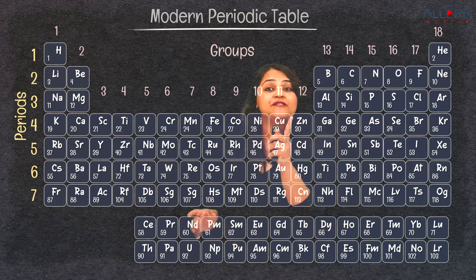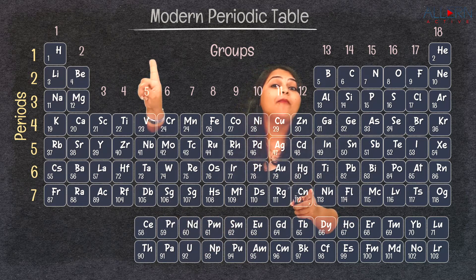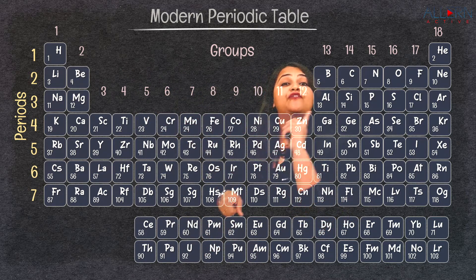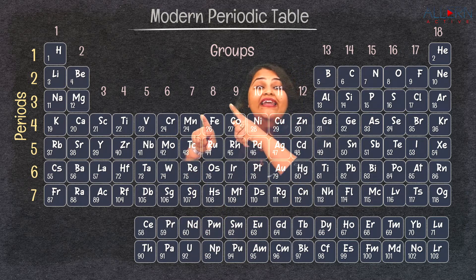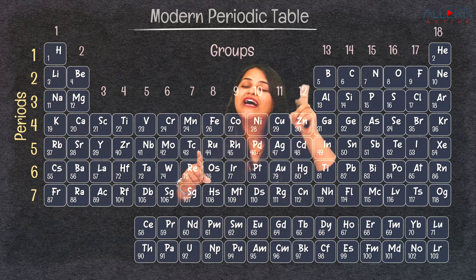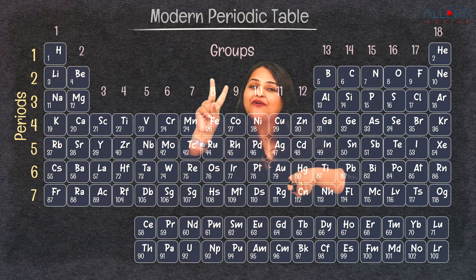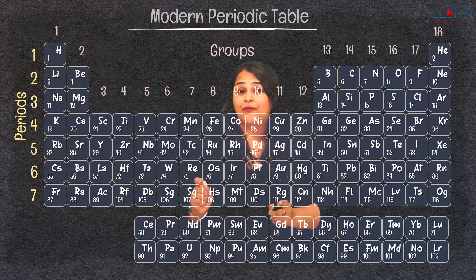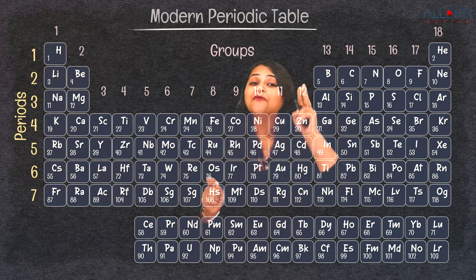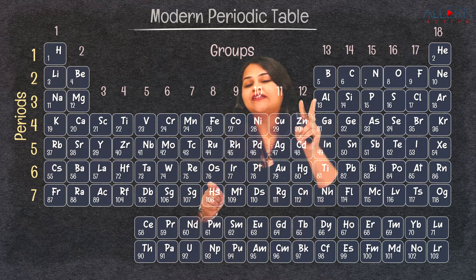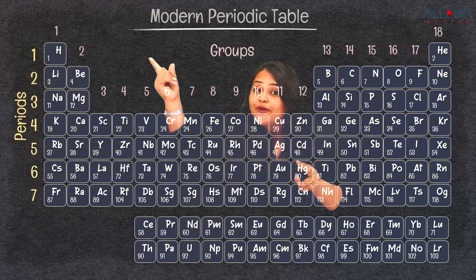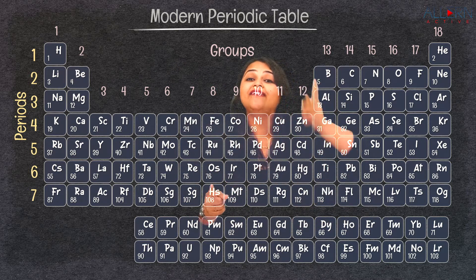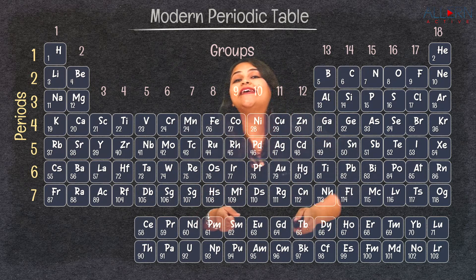If you observe, hydrogen, whose atomic number is 1, is placed at the first position, whereas helium, which has an atomic number of 2, is placed at the 18th group. So the elements always go in a horizontal manner rather than a vertical manner.